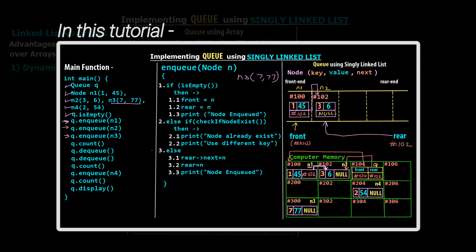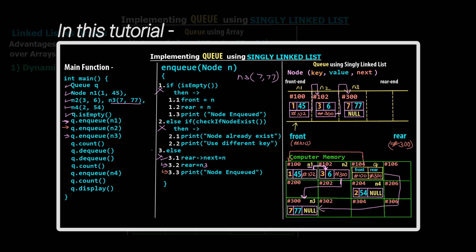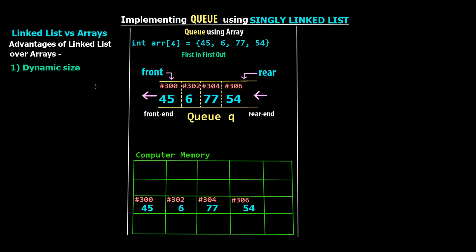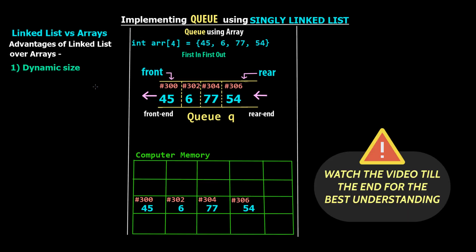In this tutorial we are going to see all the different functions of a queue data structure — queue operations like enqueue, dequeue, display, count, etc. But internally we are going to use a singly linked list and not a simple array. We are going to see the pseudocode, understand the working step by step taking diagrammatic representation of the queue in computer memory, and cover each and every topic in detail. So make sure you watch this video till the end.